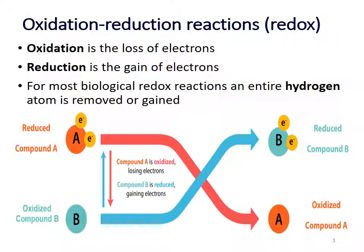Both cellular respiration, which this chapter covers, and photosynthesis, which is covered in the next chapter, are redox reactions. Basically these reactions involve the loss and gain of electrons. Oxidation is the term for the loss of electrons, and reduction is the term for gain of electrons. For most biological redox reactions, we can keep track of an entire hydrogen atom and the electron that goes with it, so we can follow hydrogen atoms as a way to follow those electrons. In the image below, compound A and compound B are shown losing and gaining electrons, using the words oxidation and reduction appropriately.